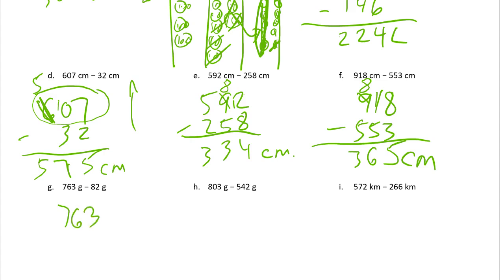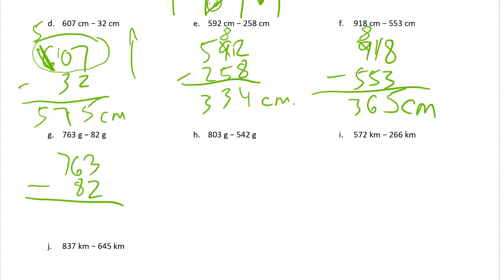Seven hundred sixty-three minus eighty-two. We have enough ones — three, we can take away two and have one left. But six minus eight: one of the ways to remind yourself not to subtract up is that the minus sign, the subtraction symbol, is down here next to the bottom number. These are the numbers you're actually taking away — I'm taking away eight tens, I'm taking away two ones. So I have to unbundle one hundred, leaving six hundreds. Now I have ten more tens plus the six I already had — sixteen. Sixteen minus eight is eight. The six hundred we still have. These are grams.